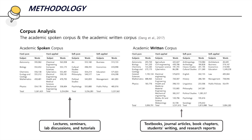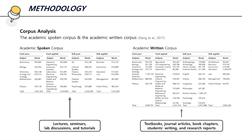Sources of the academic spoken English were drawn from lectures, seminars, lab discussions, and tutorials. Materials in the academic written English were chosen from textbooks, journal articles, book chapters, students' writing, and research reports from institutions around the world.